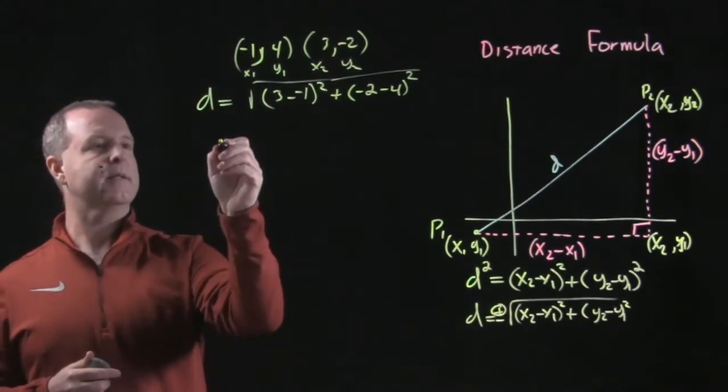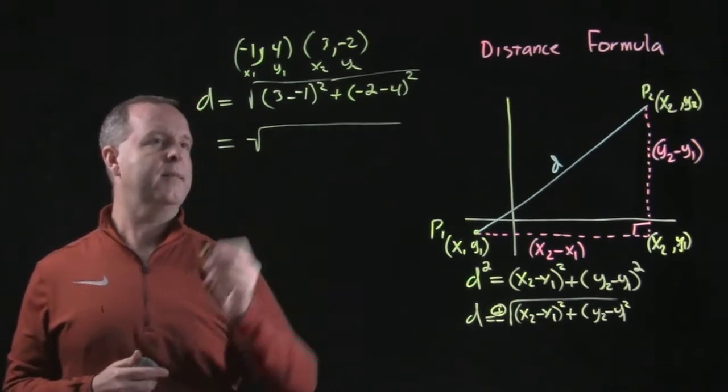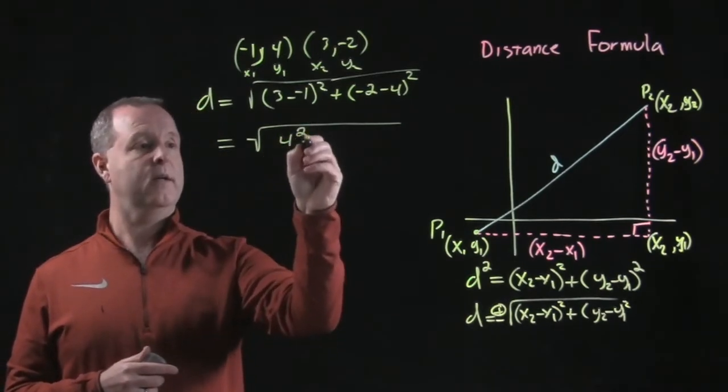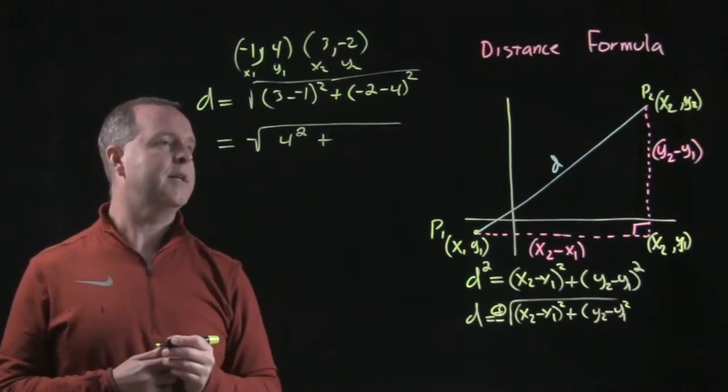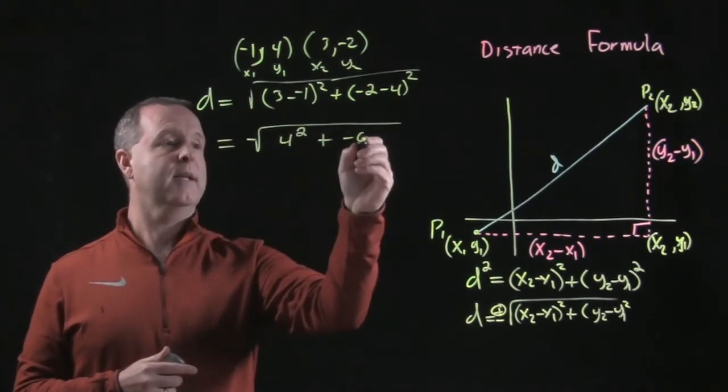Just kind of clean that up a little bit. 3 minus negative 1 is 4, 4 squared, so I have 4 squared plus negative 2 minus 4 is negative 6, negative 6 squared.